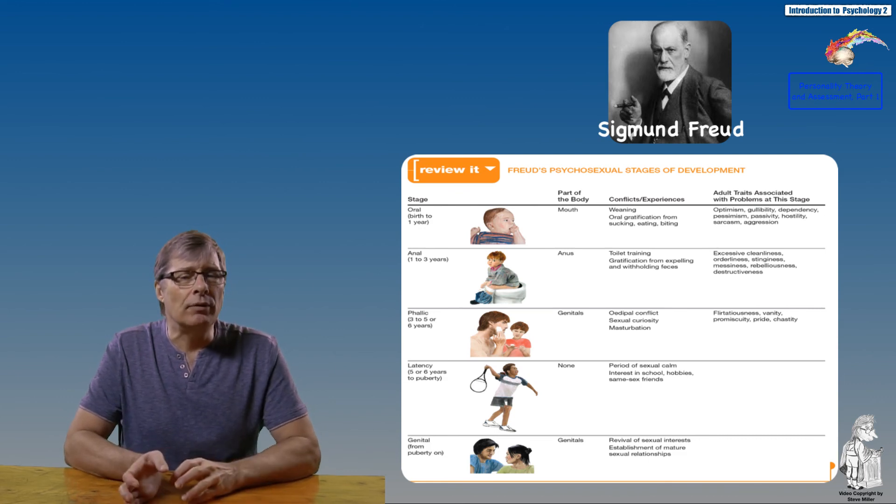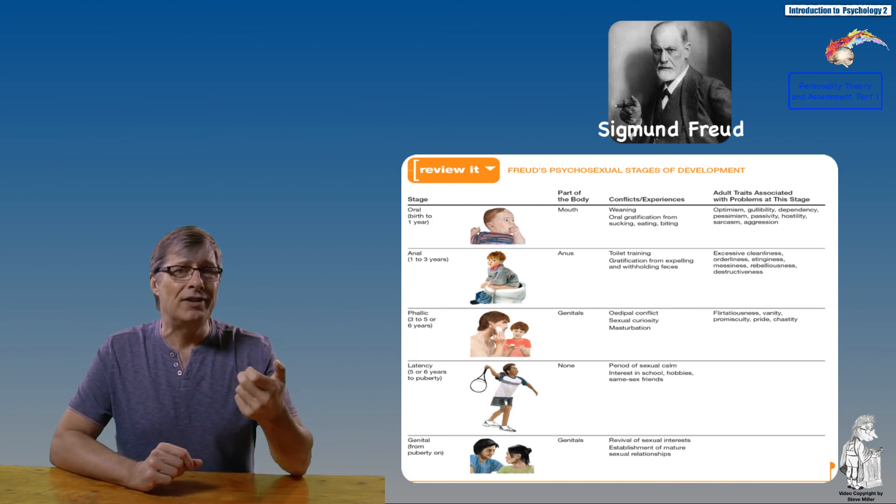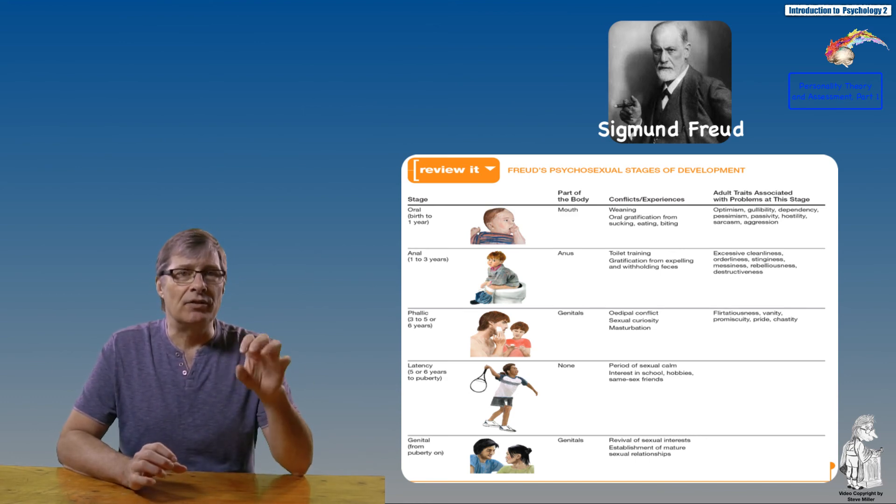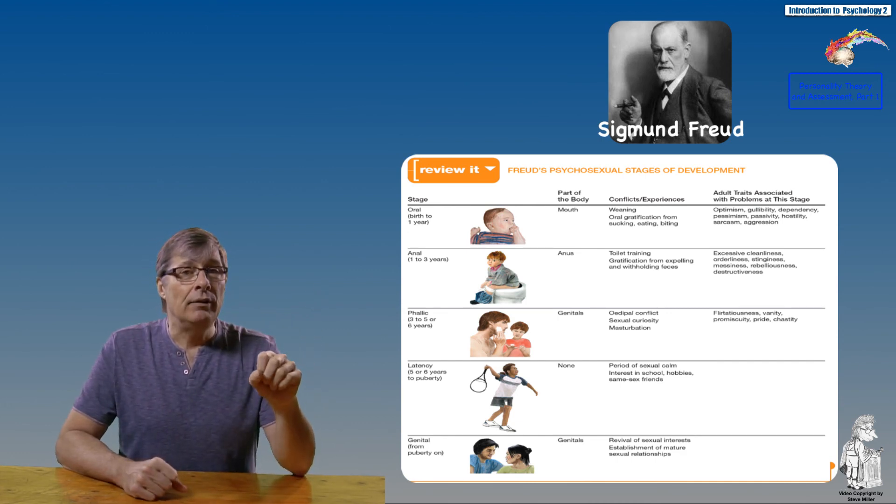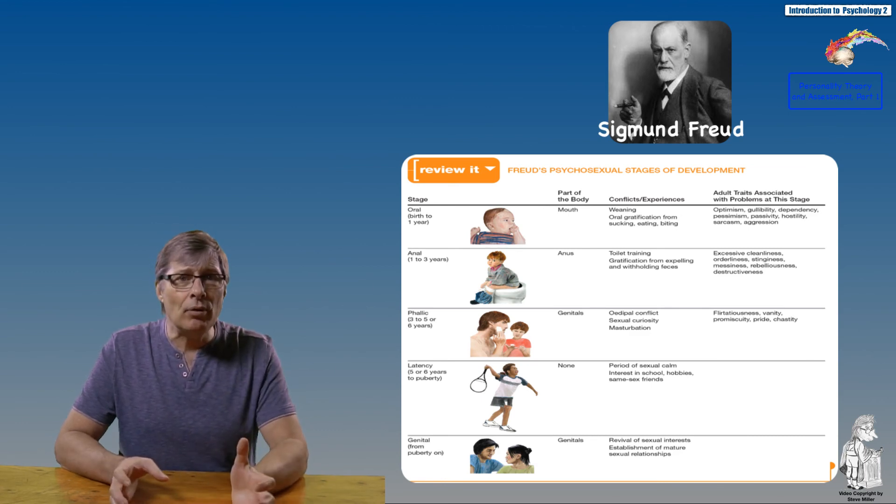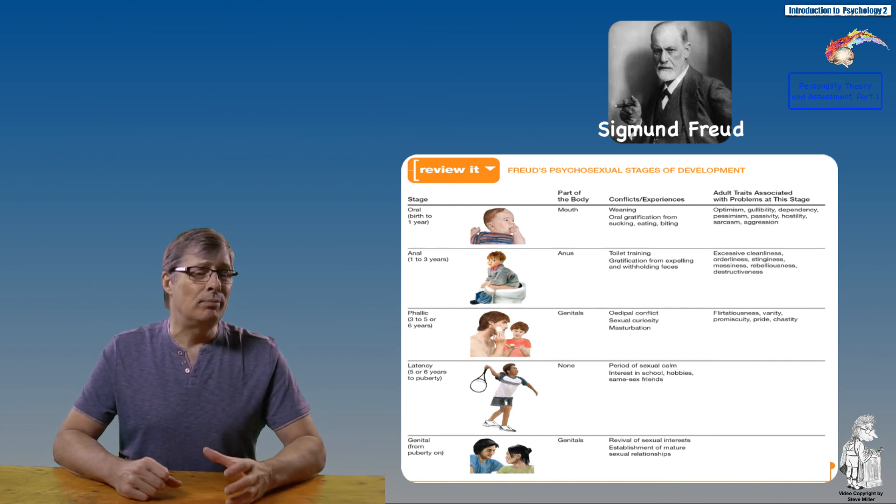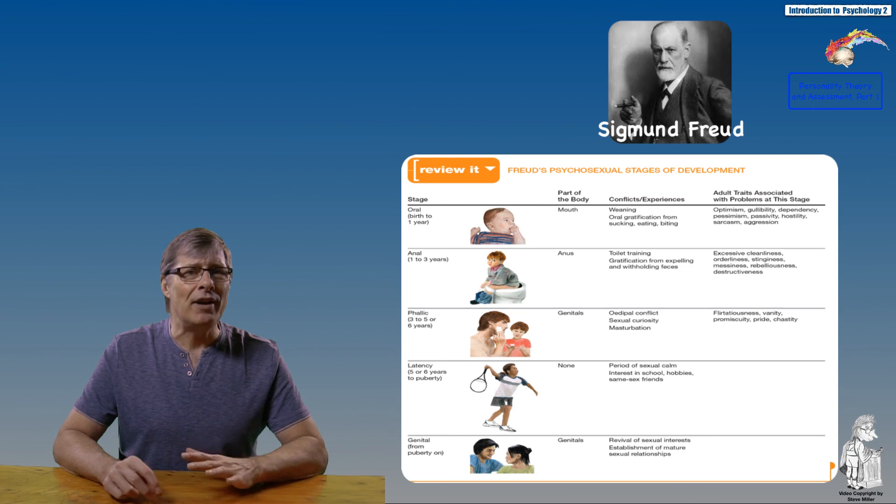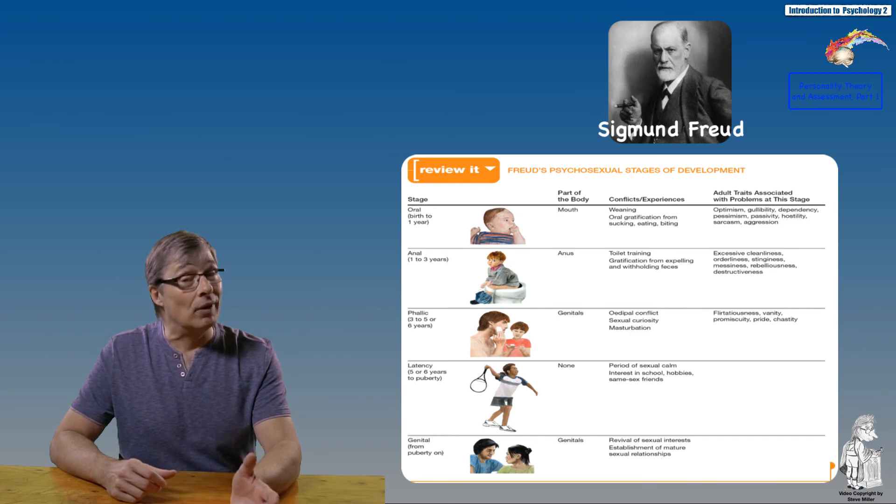Personality is influenced by traits that develop because of fixations at any psychosexual stage and the relative strength of the id, the ego, and the superego. In psychologically healthy people there is a balance among these three components. If the id is too strong and the superego too weak, people will satisfy their desires with no feeling of guilt. If the superego is too strong, it will create perpetual guilt.